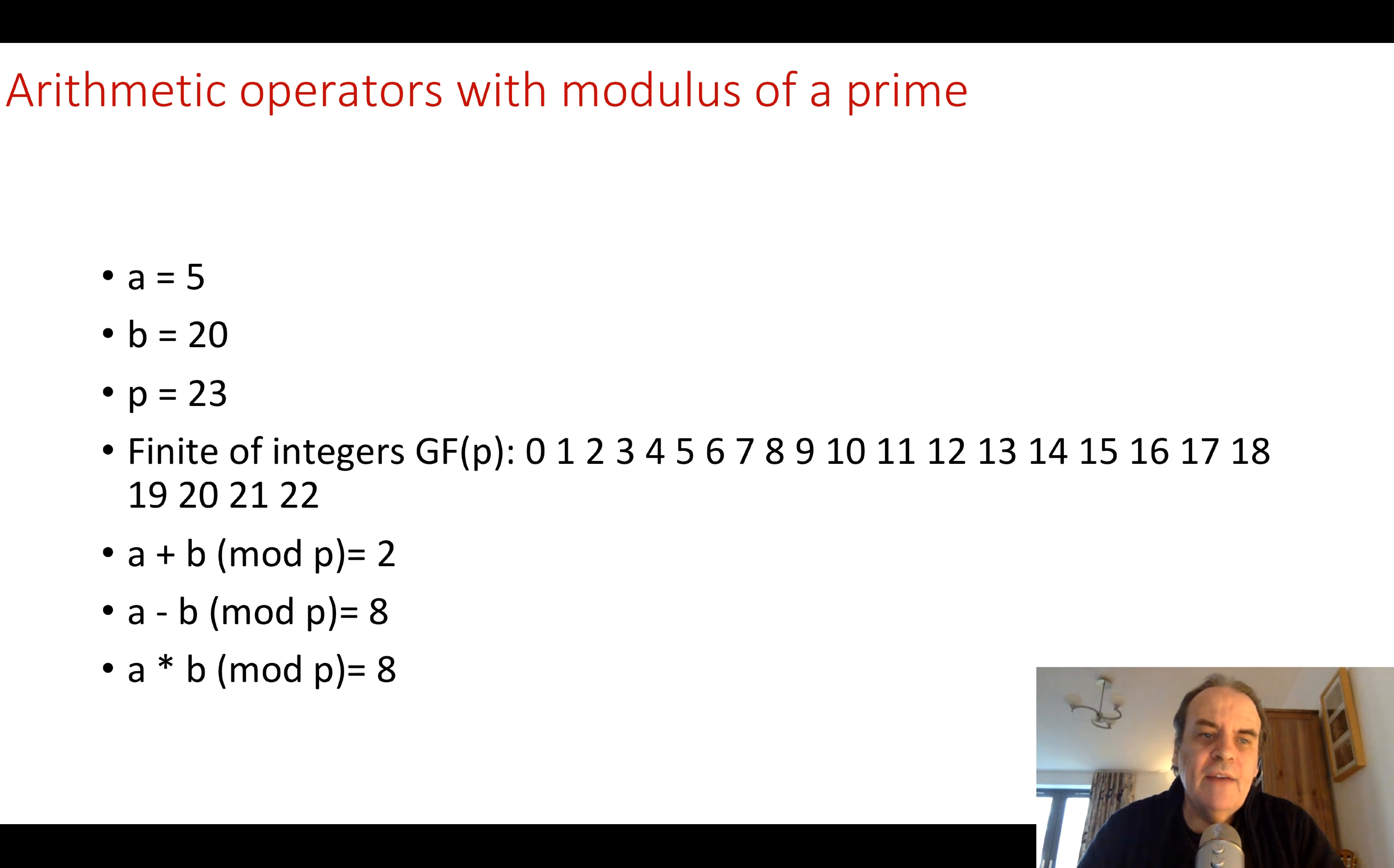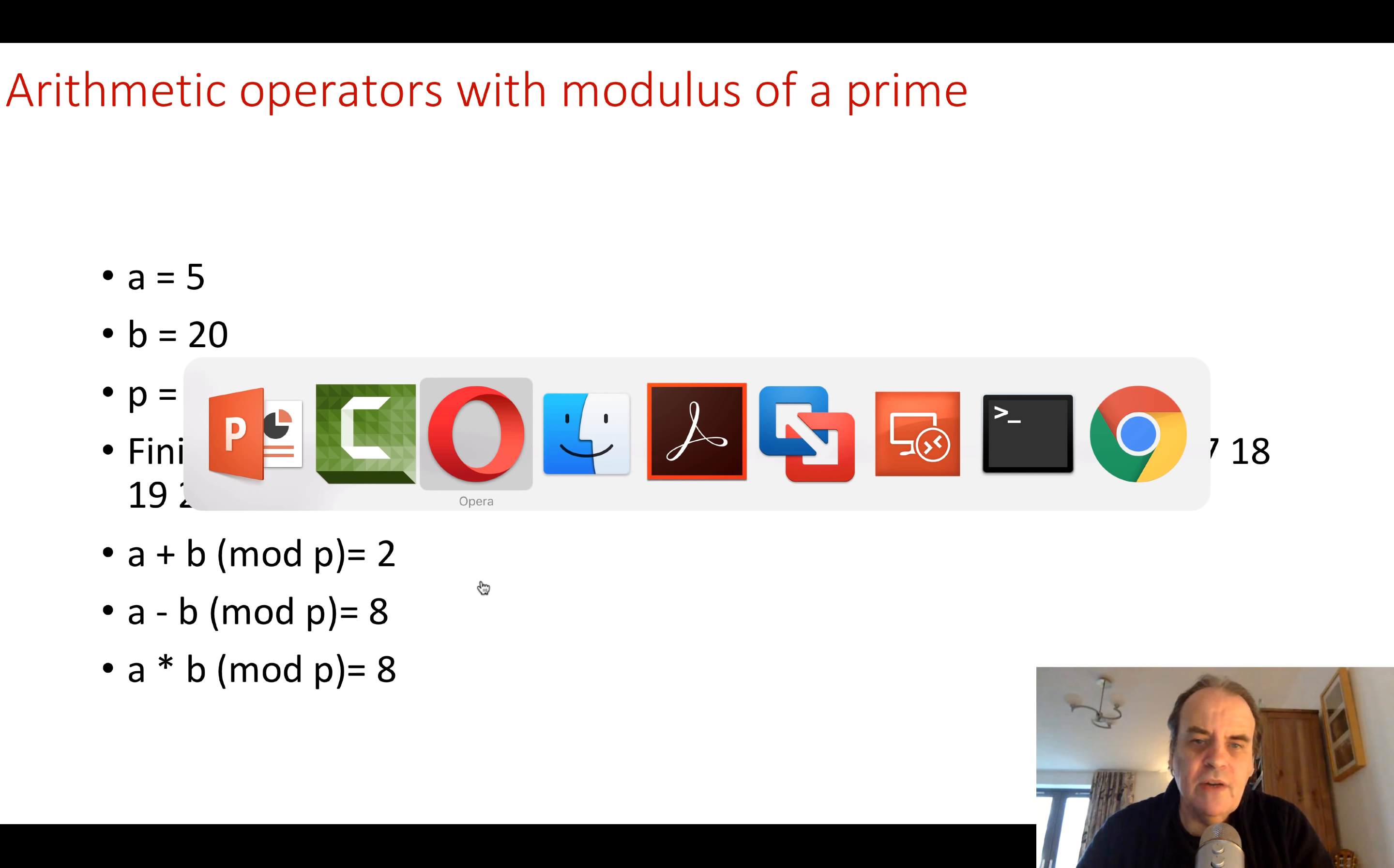When we have 5 minus 20, that's minus 15 and we would count back from 23 to give us an answer of 8. Next we've got 5 times 20 mod p. So 5 times 20 is 100 and if we do our division we end up with a remainder of 8. So in this way we can perform our calculations.